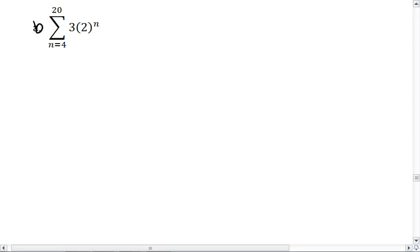In part b, we have another summation, and we notice that n is the exponent, which means this is going to be geometric. It's going to be a repeated multiplication.